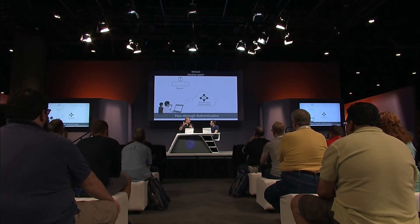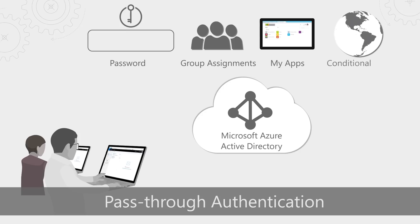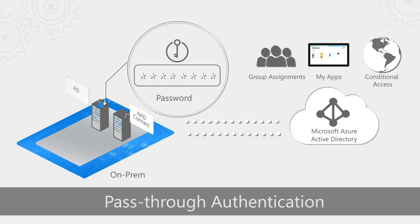Today we're announcing the general availability of pass-through authentication. It's a great new way to take the power of Azure Active Directory and use it for all the things that people do — like accessing cloud apps, managing passwords and usernames, taking care of group assignments, enabling single sign-on, and doing things like conditional access. You can now do all of that without having to have any kind of expensive on-premise infrastructure, while still keeping your passwords securely on-premise.